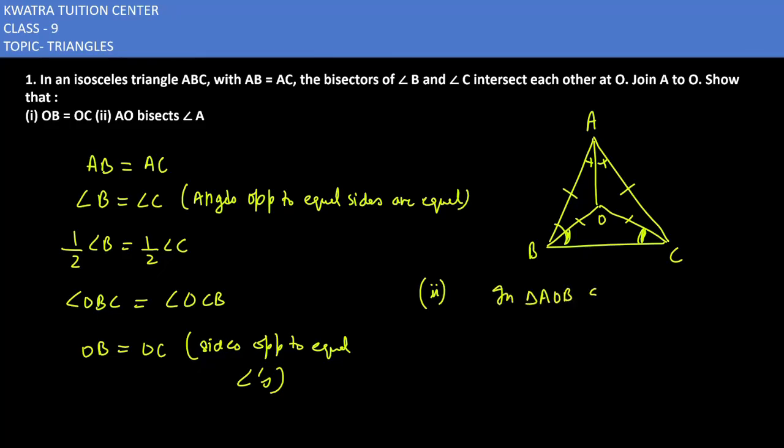Triangle AOB and triangle AOC. In triangle AOB and triangle AOC, AB is equal to AC which is given. Second, OB is equal to OC, proved above. Third part, common, which is AO is equal to AO.